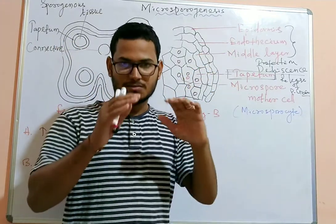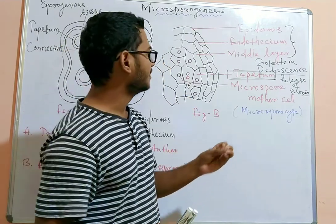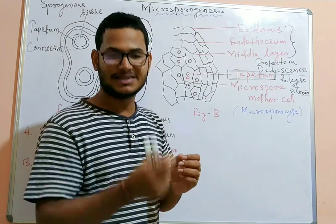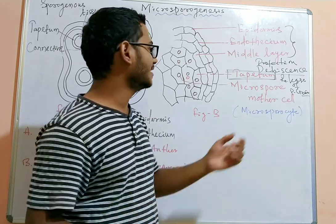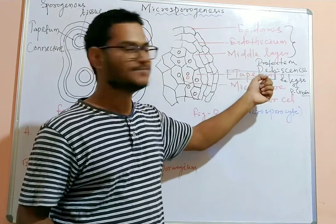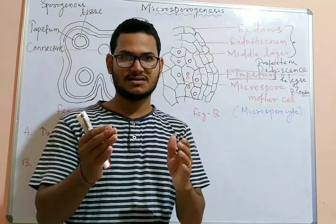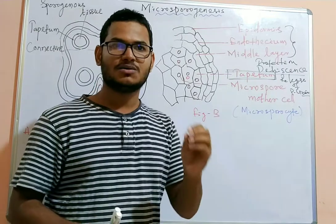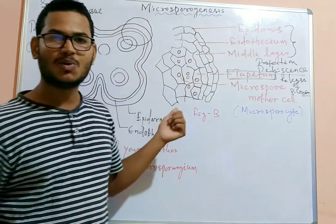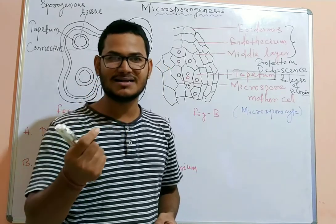The first three layers — epidermis, endothecium, and middle layer — protect the pollen grains inside the anther, serving a protective function. They also help in dehiscence, meaning they rupture the anther wall to release the pollen grains outside. The innermost wall, the tapetum, nourishes the developing pollen grain. The pollen grain develops from the microspore mother cell or microsporocyte.